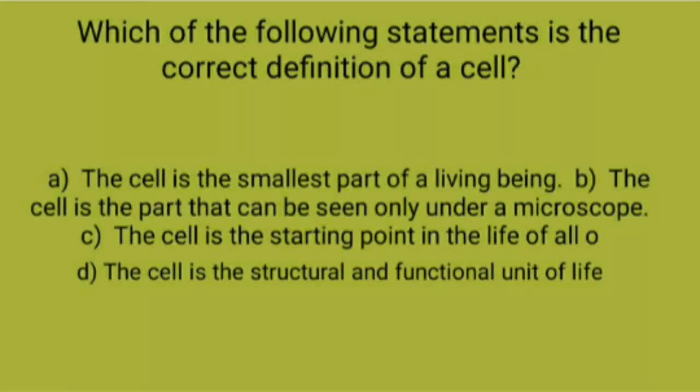Which of the following statements is the correct definition of a cell? A: The cell is the smallest part of a living being, B: The cell is the part that can be seen only under a microscope, C: The cell is a starting point in the life of all, D: The cell is the structural and functional unit of life. Correct option is D.